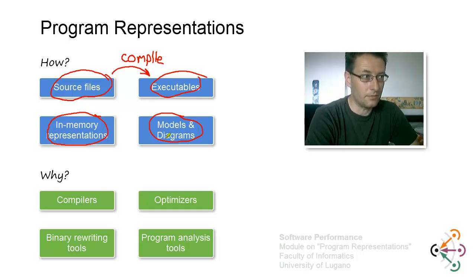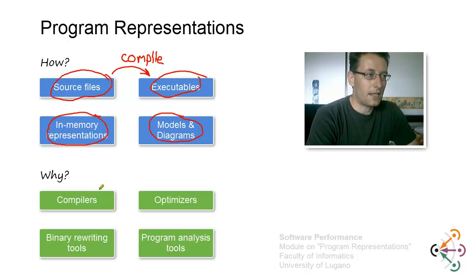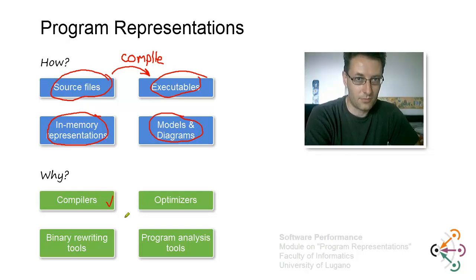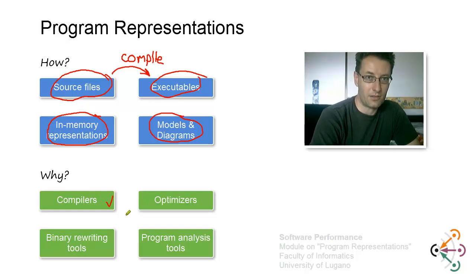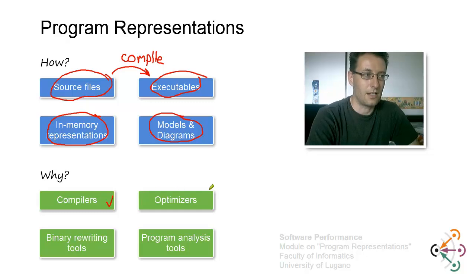We'll look at that in much more detail. But why, or who, would need such a representation? Compilers are one of the key things that require program representations — they take programs as input and produce programs as output, just in two different languages. The source file is in some language and the binary file it produces is basically a translation into a different language.